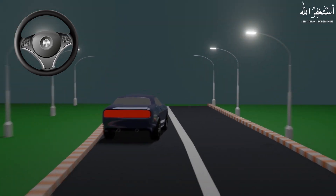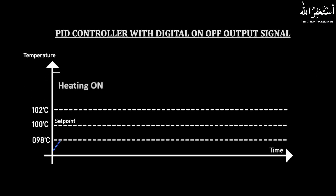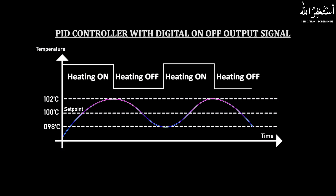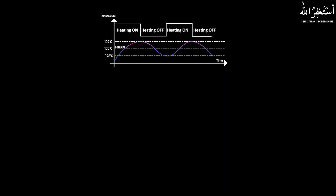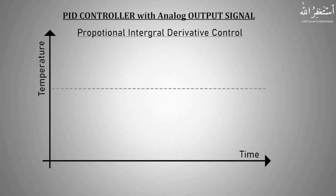Coming back to today's topic — PID controllers have two types of output signal. The first one is the digital on-off output signal, and the second one is the analog output signal.